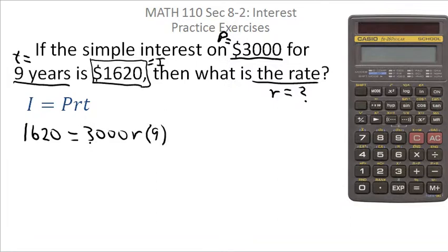So I think on the right, I'd go ahead and multiply 3,000 times nine. That gives me 1620 equals. You probably can do this in your head, but if you can't, the calculator would be 3, 0, 0, 0 times nine equals. And what you would see in the calculator display is that product, which is 27,000.